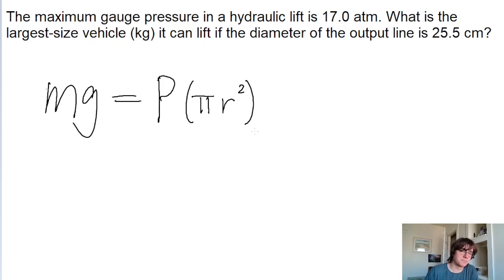So from here on out, this problem is pretty simple because we're looking for the mass. So all we got to do is algebraically solve for mass by dividing both sides of the equation by g. So the pressure multiplied by pi r squared divided by g, and that's the mass.